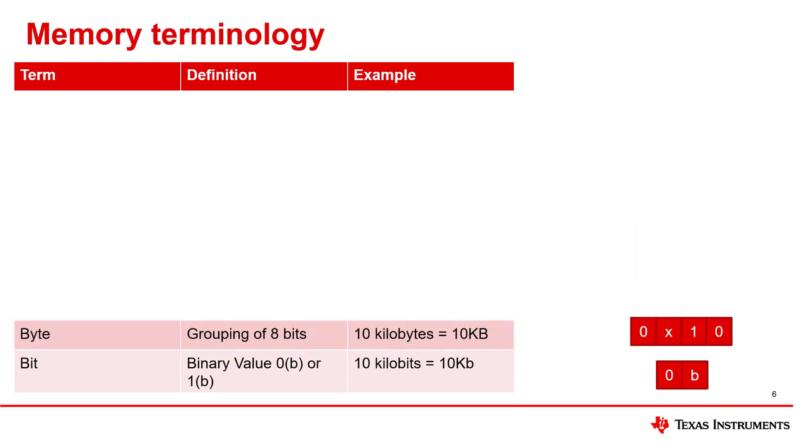The next representation is the byte which is a grouping of 8 bits. Bytes are notated by an uppercase B, so 10 kilobytes would be written as 10 KB. This is a very typical size notation since many embedded devices are 8 bit or byte addressable.